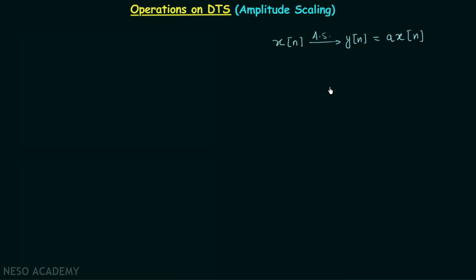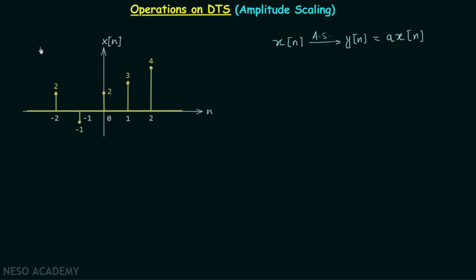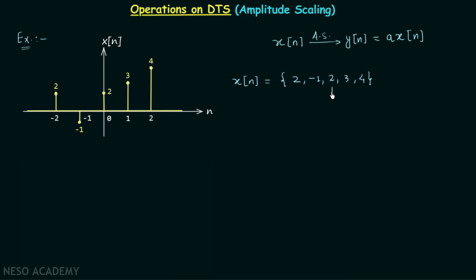Let's understand this with an example. The plot of signal Xn is given, and from it we can read: Xn = {2, -1, 2, 3, 4, 2, -1, 2, 3, 4}. Since Xn equals 2 when n equals 0, we place an arrow mark below that value. Now we will perform amplitude scaling on Xn.